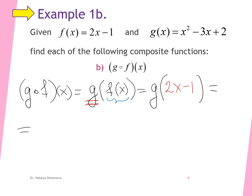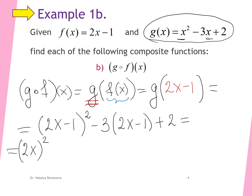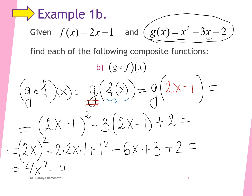According to the given information, we write 2x minus 1 in place of f of x. We find the value of function g when the independent variable equals 2x minus 1. So we expand (2x minus 1) squared using the complete square formula: 2x squared minus 2 times 2x times 1 plus 1 squared. Then we distribute negative 3 to get minus 6x plus 3 plus 2. Simplifying gives 4x squared minus 4x plus 1 minus 6x plus 5.